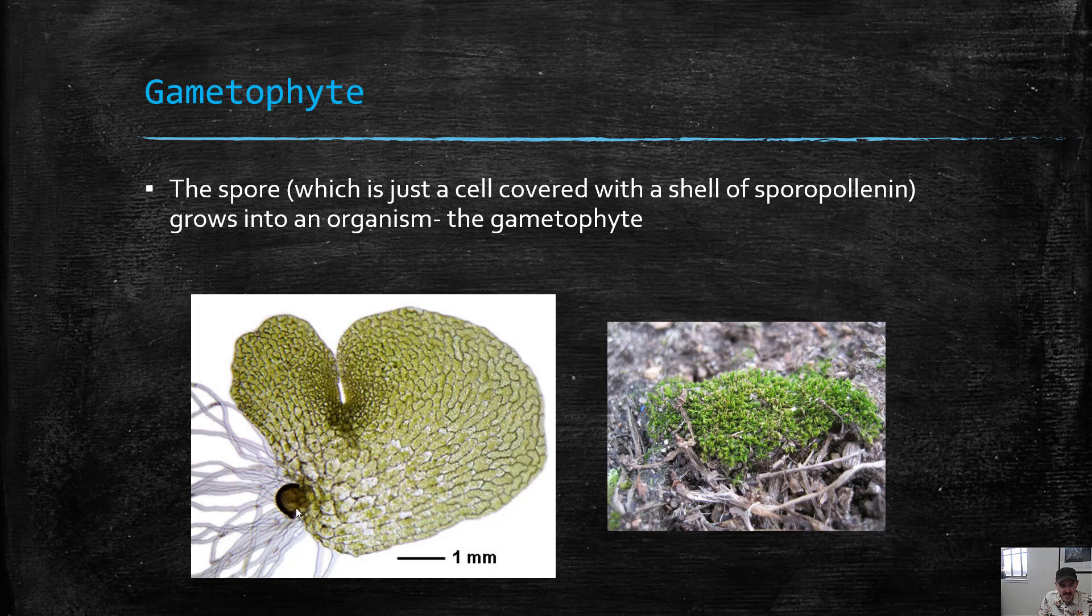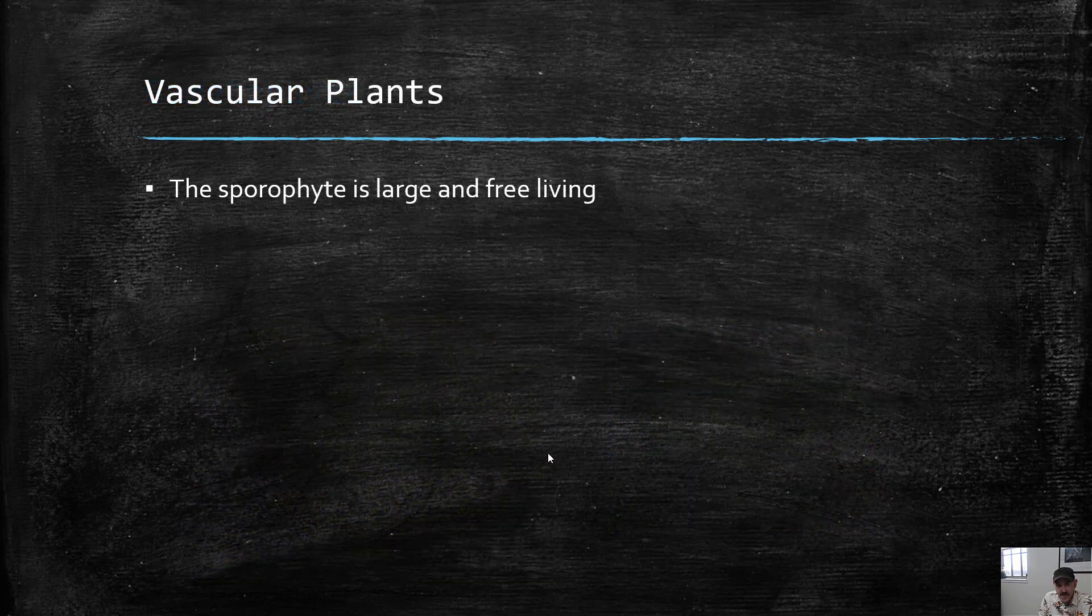Here we see, if you look down here, this little dark spot right there, that's part of the spore still stuck to this gametophyte of a fern. This is a fern gametophyte. Notice how small it is. The scale bar is only one millimeter. So this whole thing is a couple millimeters wide. Not very big at all.